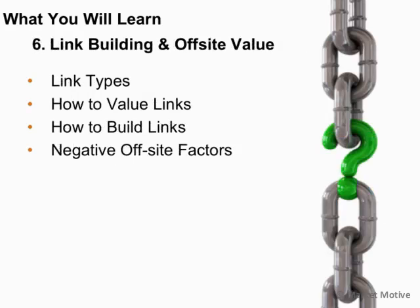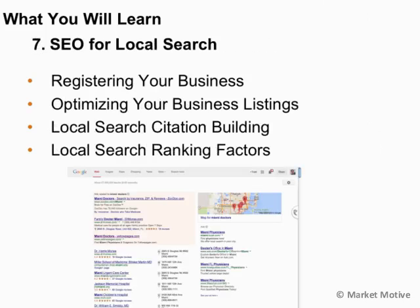We'll also consider link building and the types of links we want to get and their value. We'll look at tactical examples of how to build links, as well as considerations and factors that may have a negative impact on your website's search rankings. If you're a local business, we'll look at how to register your business for local search and optimize those listings, build citations in local directories, and examine 20 local search ranking factors and how each affects your position.